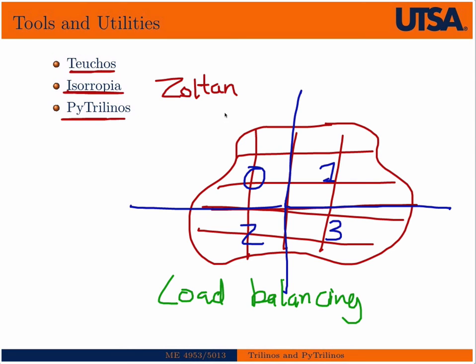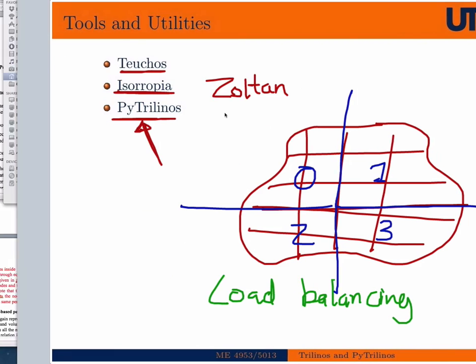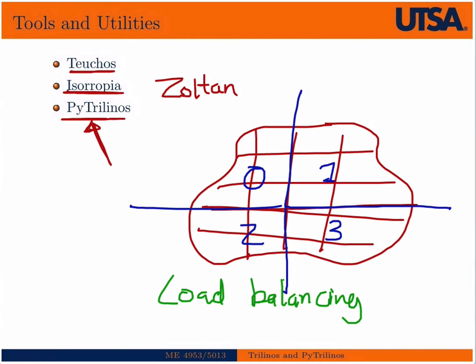Zoltan can load balance in many different ways, graph partitioning algorithms and other things. So Isorropia is an Epetra interface to that, and that's how we'll use it from PyTrilinos. PyTrilinos is itself a package, but before we go on to PyTrilinos, let's take a look. I only listed just a handful of the packages that are available. So let's go ahead and take a look at the Trilinos website real quick.